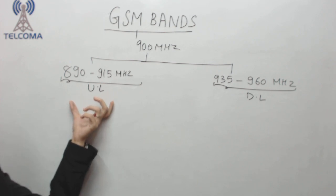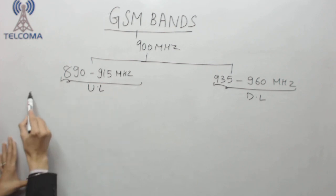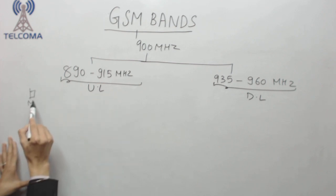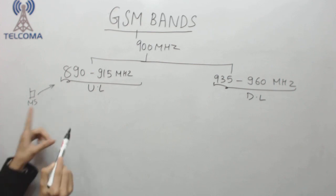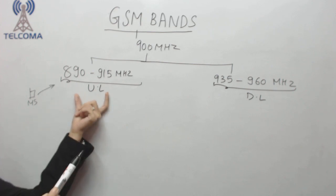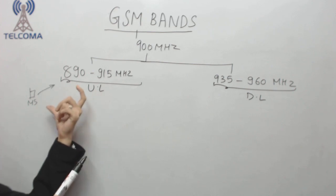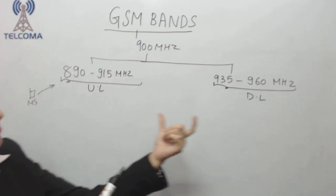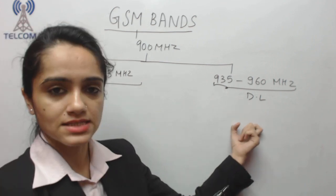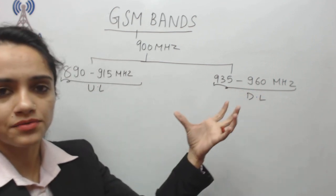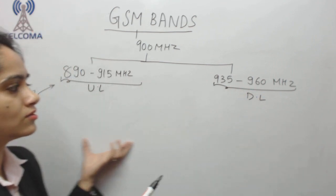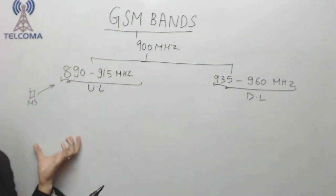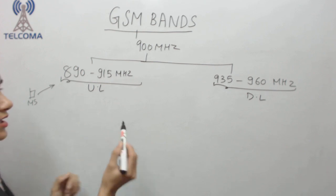The lower frequency range is reserved for uplink because the UE or mobile station has lesser power and needs to cover the distance to the network. With lesser frequency it can cover more distance. The network has more power than the mobile station, so it uses the higher frequency range for downlink.